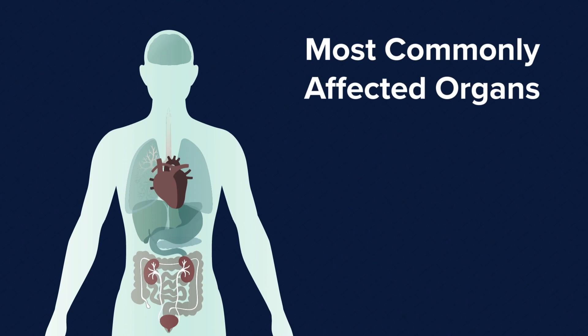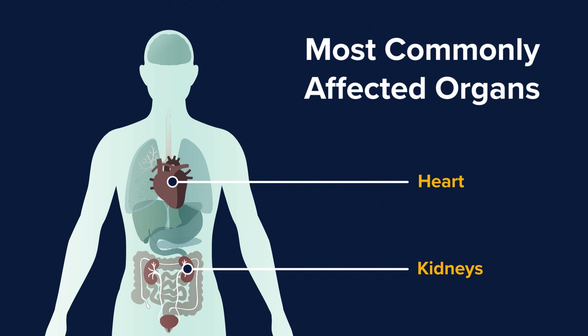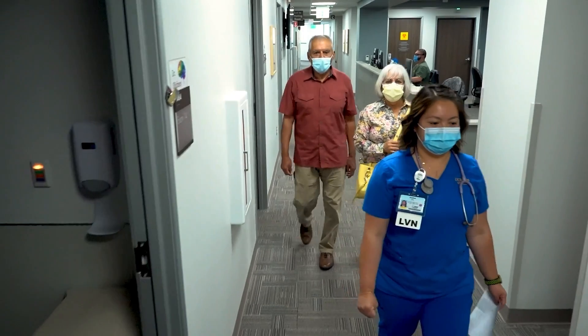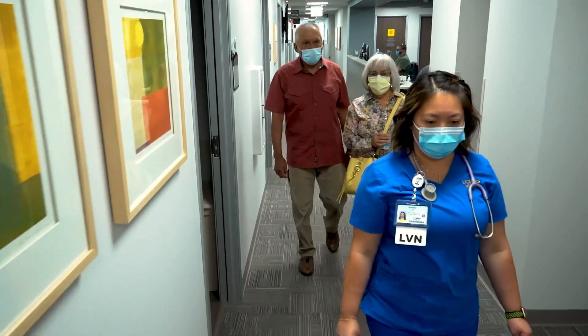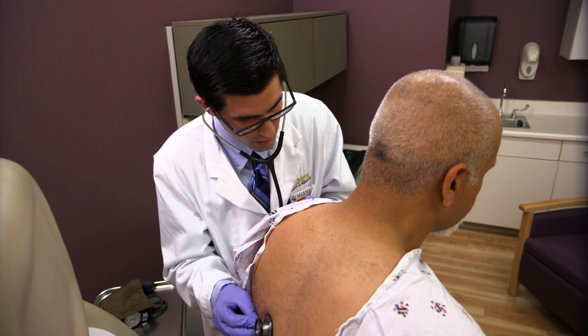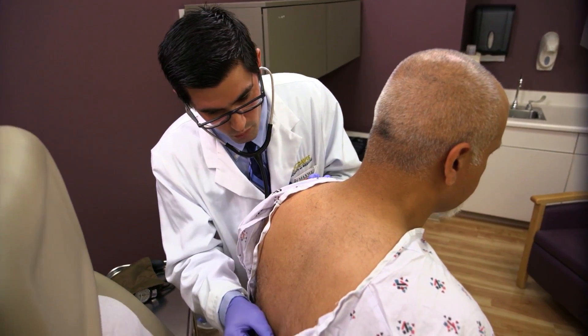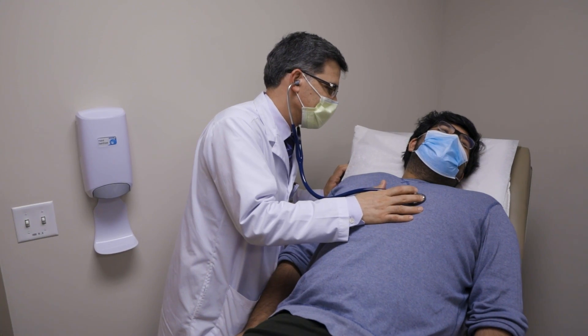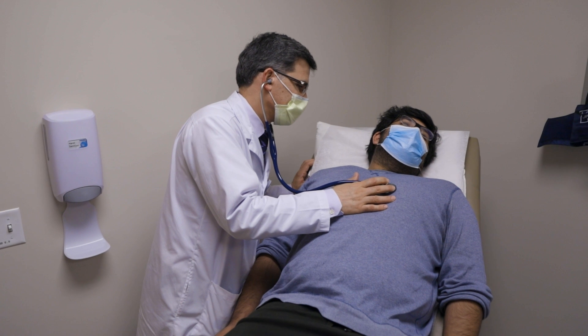The most common organ affected is usually the kidney, but the heart is the second most common organ to be affected. Diagnosis happens when you meet certain criteria in heart failure. A lot of people come to us because all of a sudden they're getting short of breath or getting a lot more swelling in their body. You would need to see your cardiologist, and we'll go down a protocol to figure out if you do have amyloidosis.